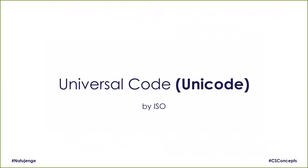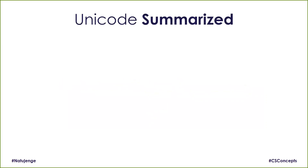And that solution is Universal Code, also referred to as Unicode, by ISO — the International Organization for Standards. Unicode is slightly different from the other character encoding systems we've covered, because all of them have a way of converting characters into a numeric or binary representation.